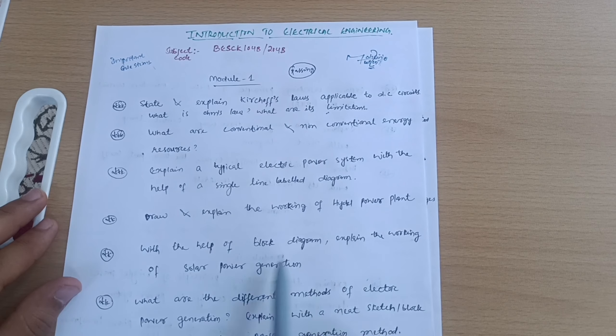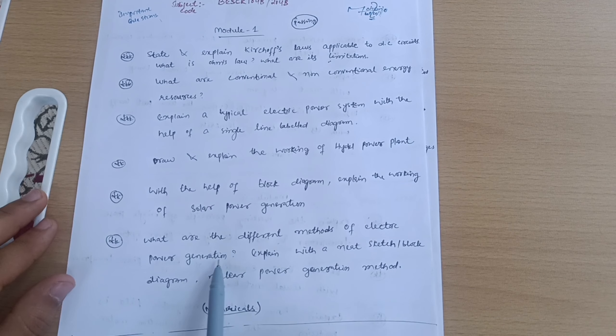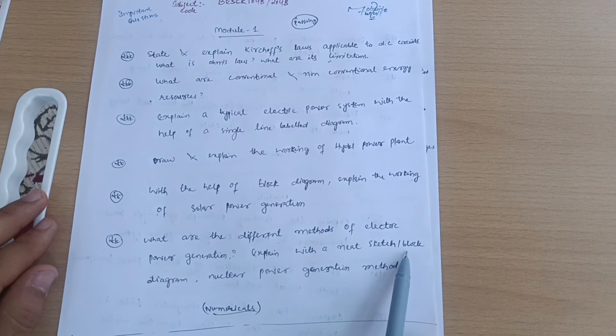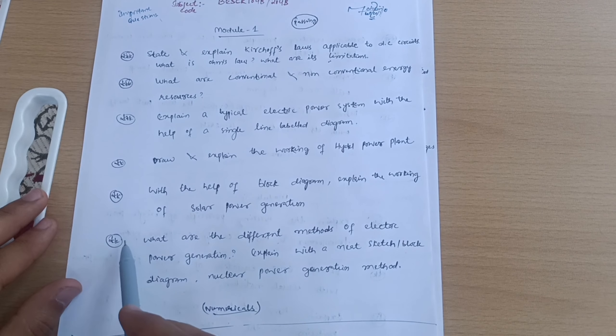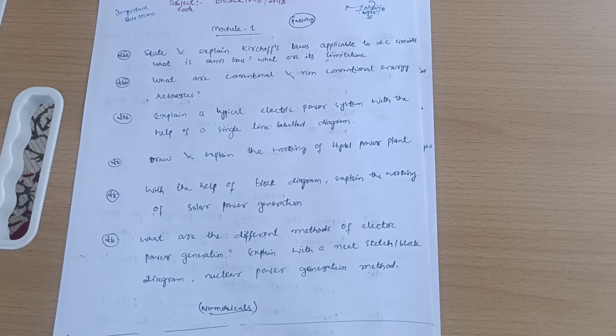Last question: What are the different methods of electric power generation? Explain with neat sketch block diagram nuclear power generation method. These are six questions from each module. You can only go for five questions from each module.